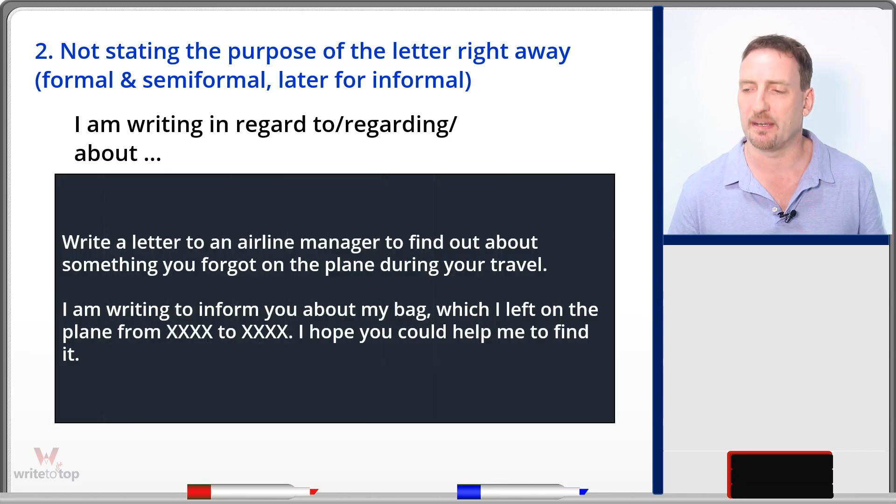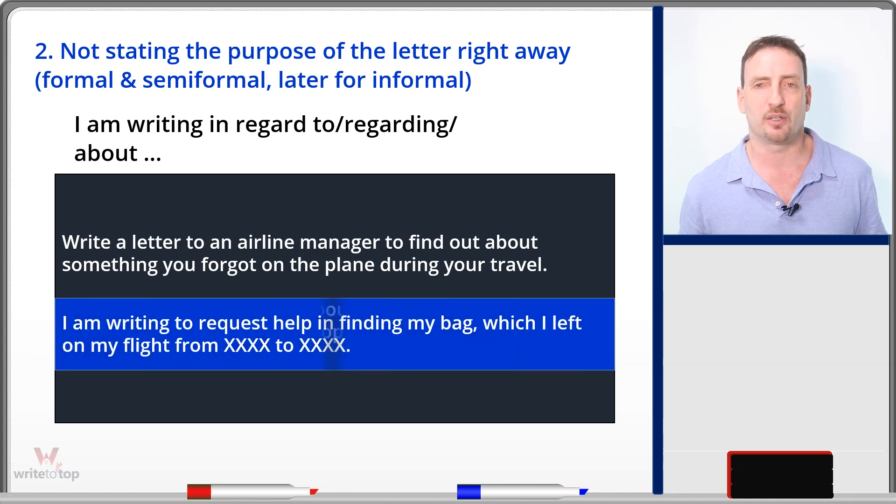The task is write a letter to an airline manager to find out about something you forgot on the plane during your travel. So this is a student sample: I'm writing to inform you about my bag, which I left on the plane from wherever to wherever. I hope you could help me to find it. First of all, you have two sentences essentially saying the same thing, right? Be very direct, very simple, and then concentrate more on the details in the body paragraph. An easier way to write this as one sentence: I'm writing to request help in finding my bag, which I left on my flight from A to B, right? Get to the point, get more details, elaborate more in the body paragraphs. Very, very important. A lot of people don't do this, and they lose points for cohesion and coherence in their scoring criteria.